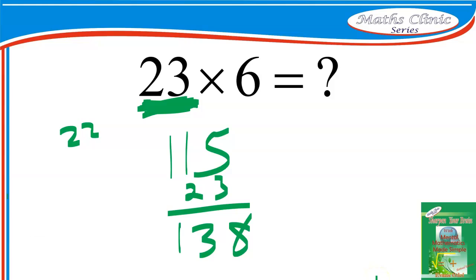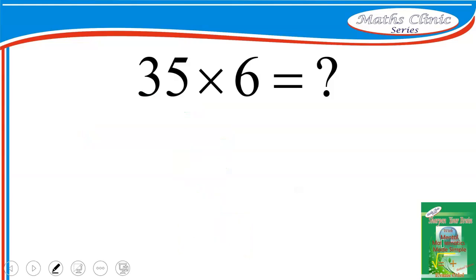To recap: multiply the odd number by 5 first, then add the original number to that product. Let's try another example: 35 times 6. Since 35 is odd, multiply by 5 — subtract 1 to get 34, divide by 2 to get 17, attach 5 — so 35 times 5 is 175.